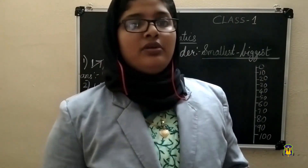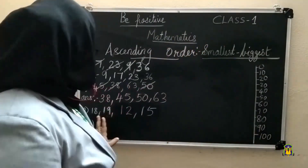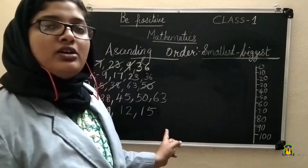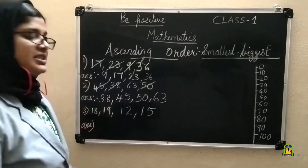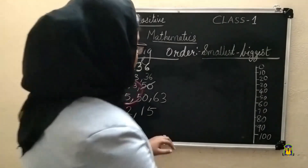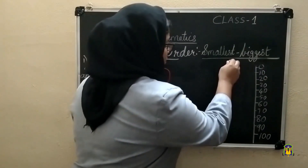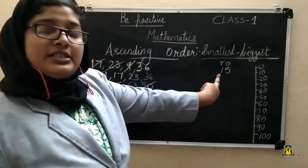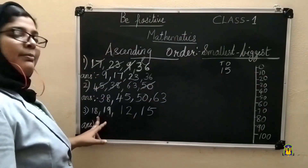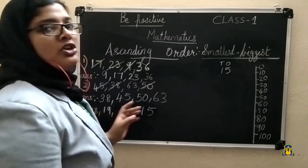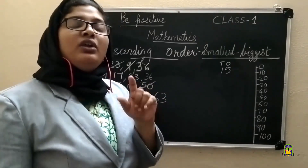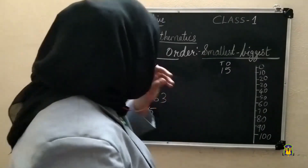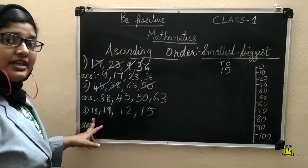One more example: 18, 19, 12, 15. This is a special case because in all these numbers, the tens place is the same — it is 1. So there is no need to look at the tens place; you have to see only the ones place and find out which is the smallest number. The smallest number is 12.